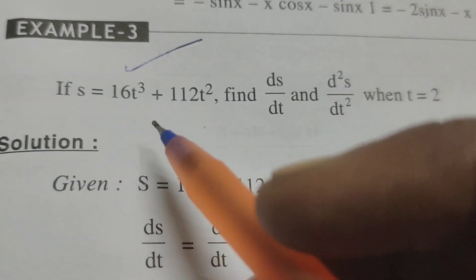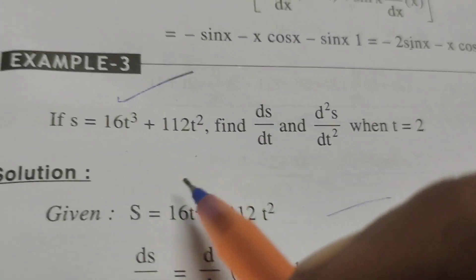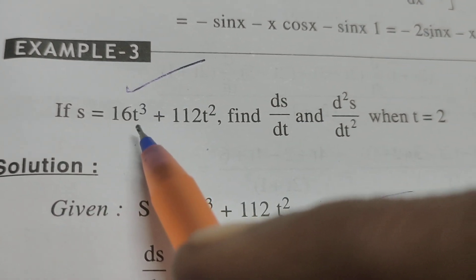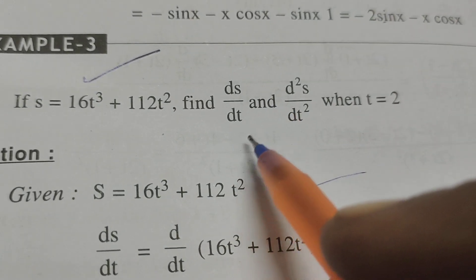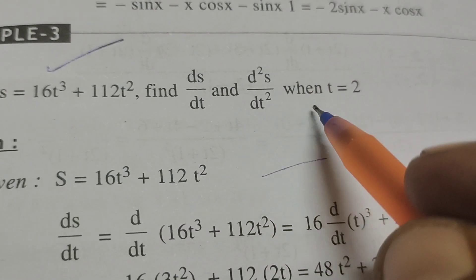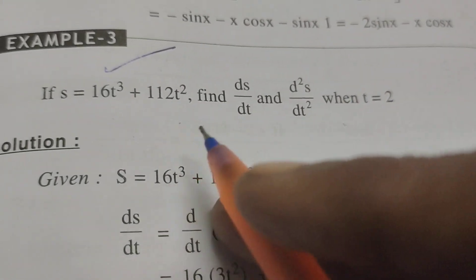Today we are going to explain a differentiation problem. If s equals 16t³ plus 112t², find ds/dt and d²s/dt² when t equals 2.